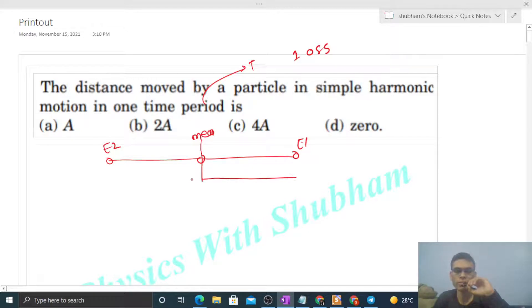The particle starts from mean position, then goes from mean position to E1, then E1 back to mean position, then mean position to E2, then E2 back to mean position.